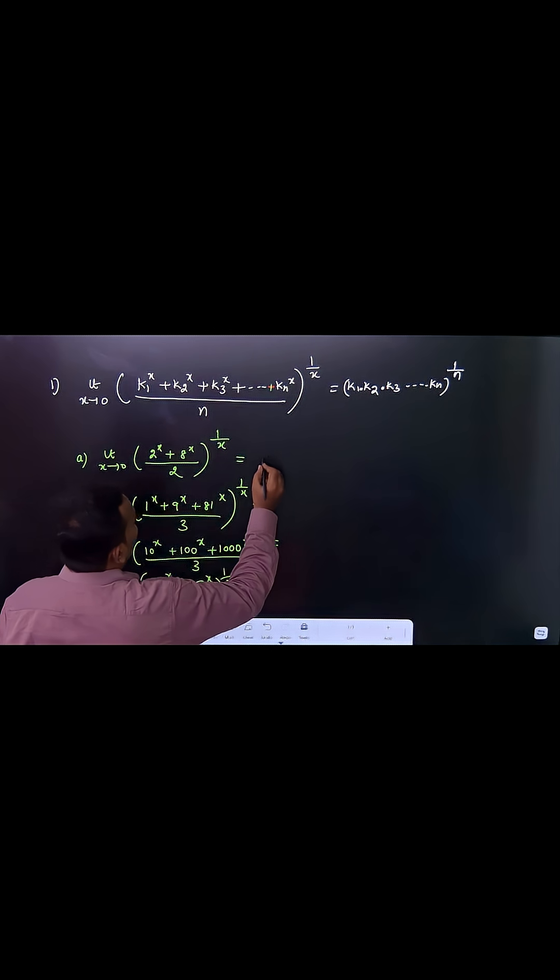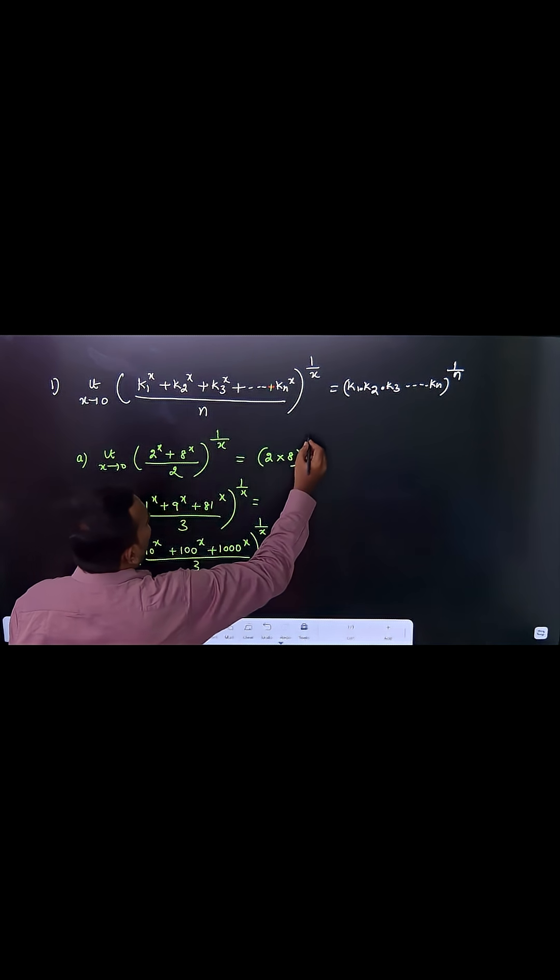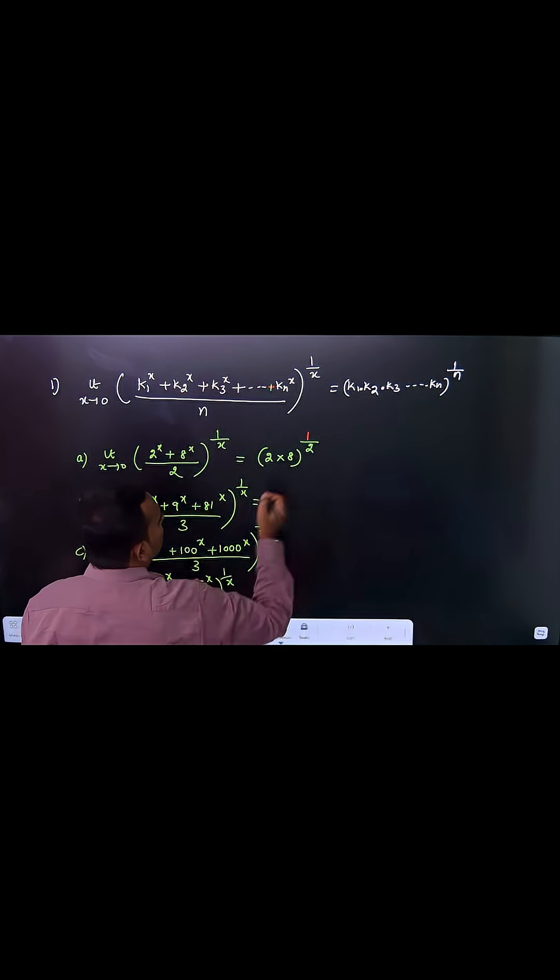Here k1 is 2 and k2 is 8. You multiply them and raise to the power 1 over the number of terms, which is 2.